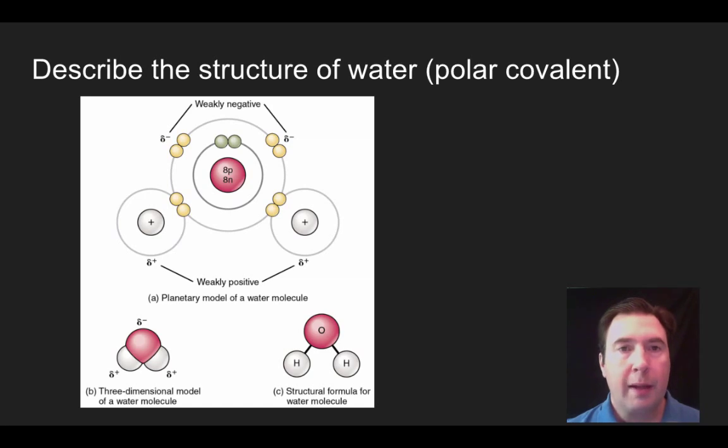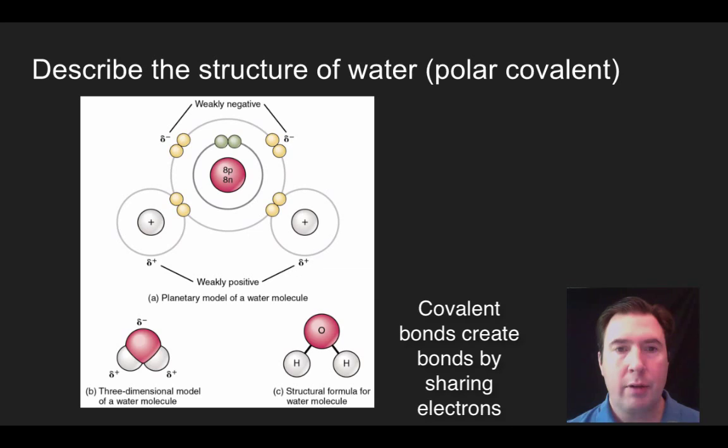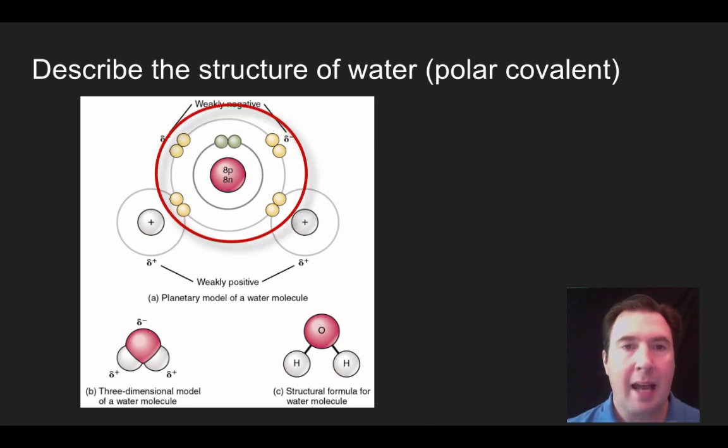So thinking back to previous videos, you can see that water is a covalent molecule. That means that there are shared electrons between the hydrogens and the oxygens that make up water in order to achieve that octet for the oxygen and the two electrons in the valence shell for hydrogen.